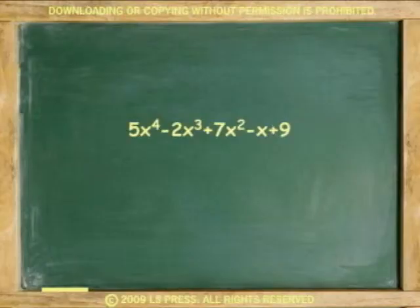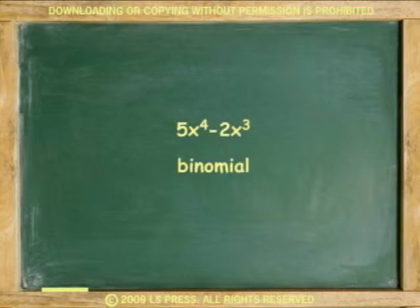Polynomials are algebraic expressions with two or more terms separated by either an addition or a subtraction sign. A two-term polynomial is called a binomial. A three-term polynomial is called a trinomial.